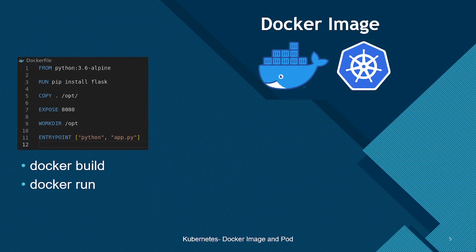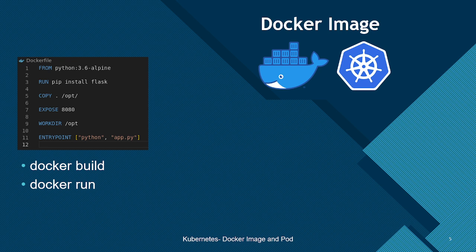A quick walkthrough on what the Docker image will contain. The FROM command will first pull the base image, that is Python 3.6, as our application is based on Python. It's using the Alpine version, which is the lightest version of Python 3.6, and thereafter it will install Flask. Flask is used to expose and serve the web application from within the container.